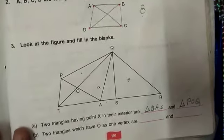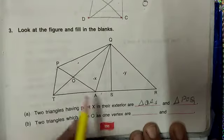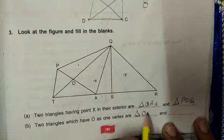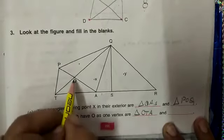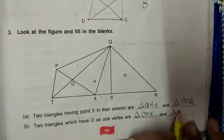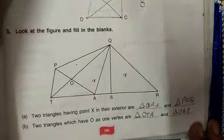Next, two triangles which have O as one vertex. Triangle O, T, A. Triangle O, A, Q. So many triangles are formed with vertex O. You can write any.